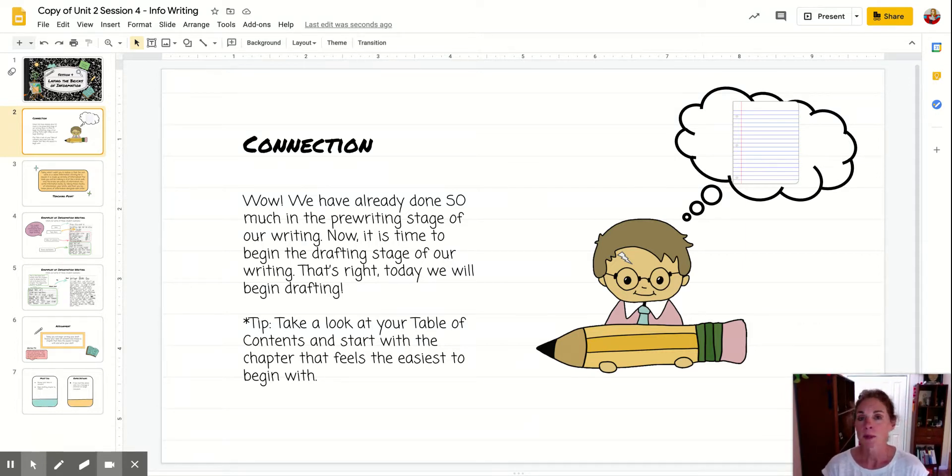I'm going to give you a little tip. When you begin your draft, take a look at your table of contents and think about which chapter is going to be the easiest one for you to write. And that's where I would start.